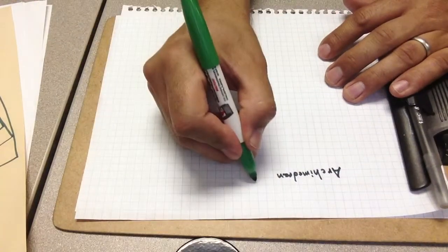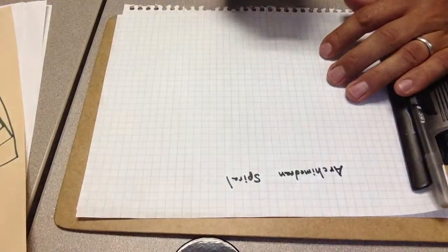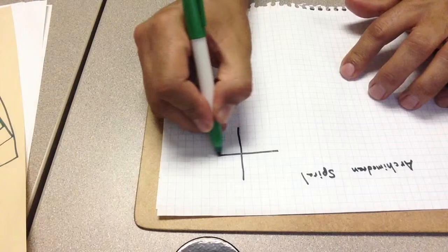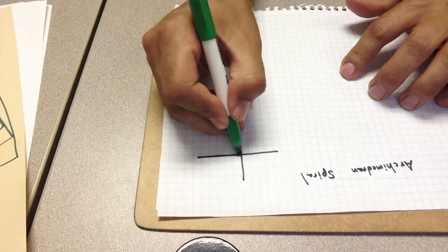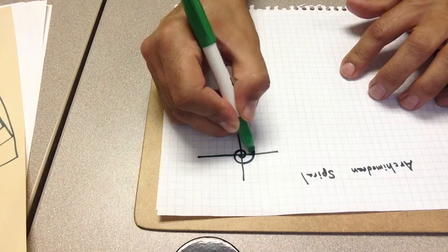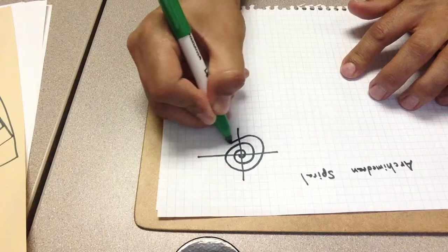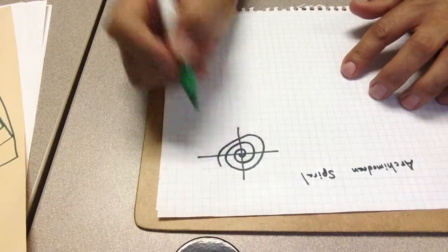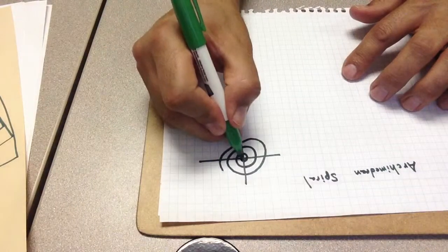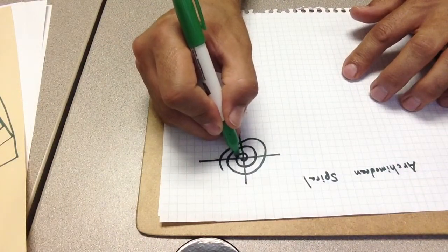This is how we create an Archimedean Spiral. The properties of an Archimedean Spiral, and this is a very humble version of it, is that there's an equal distance between a ray originating in the origin and each successive intersection with the spiral.